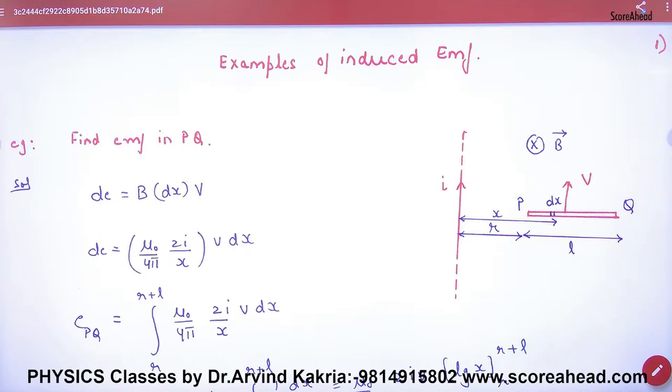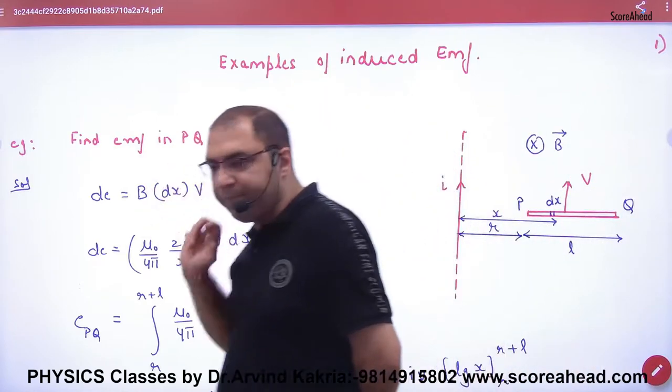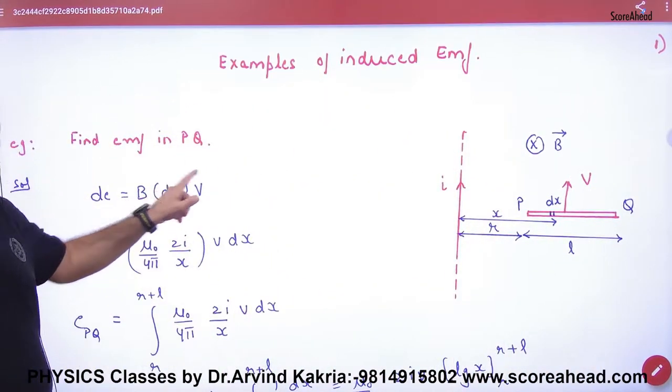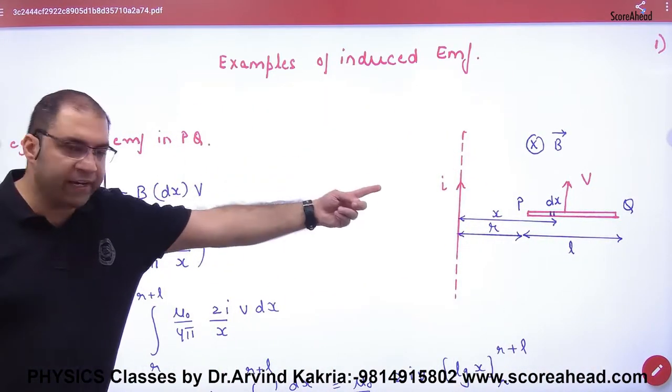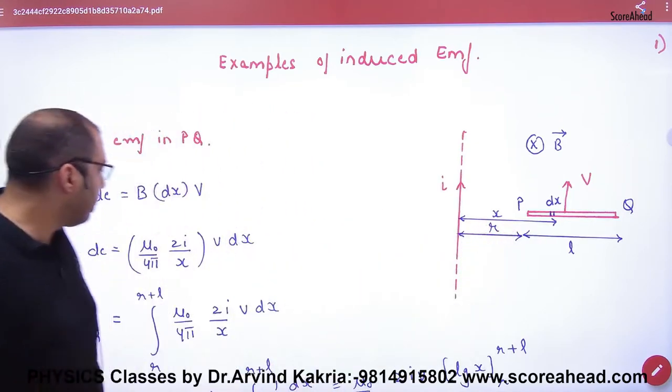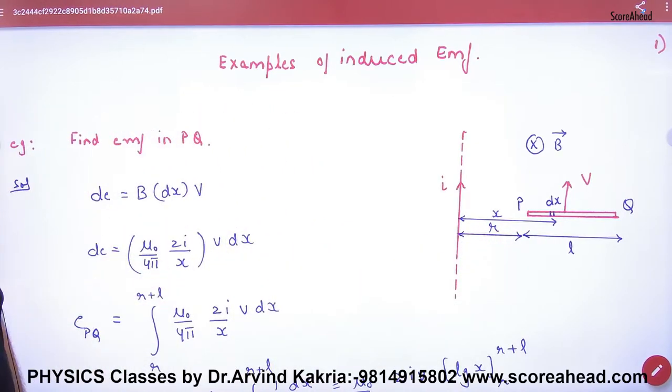So what should we do? Integration. We take a small length dx at distance x. If it is dx, then what will generate a small EMF? B into length dx into V. And what will be infinite wire at distance x? mu0 by 2π by I by x. So small EMF, total EMF.